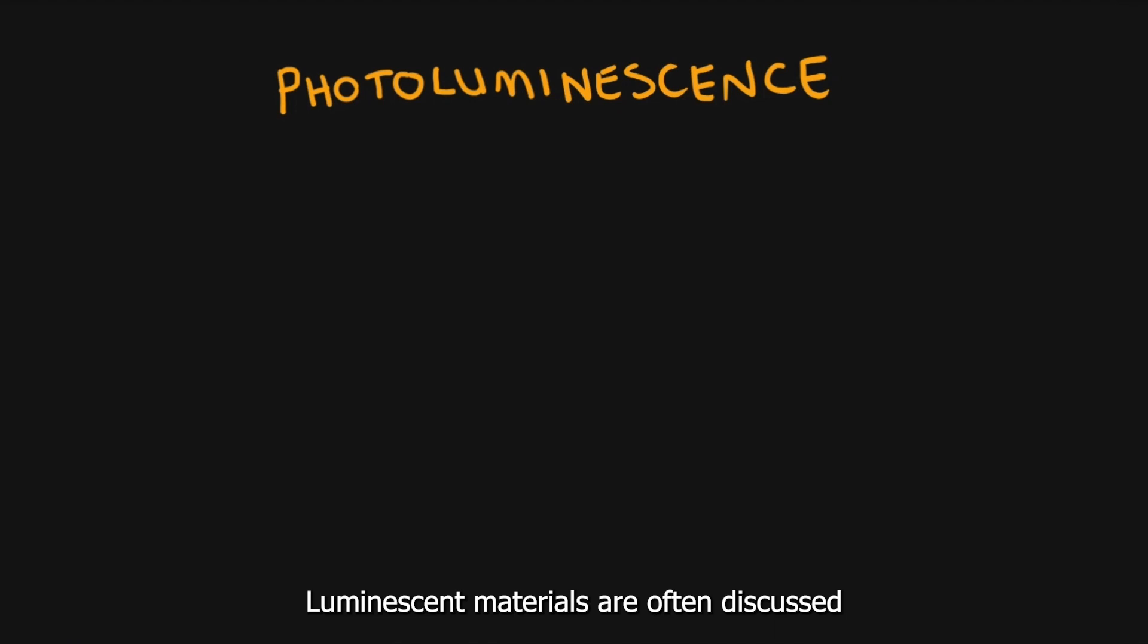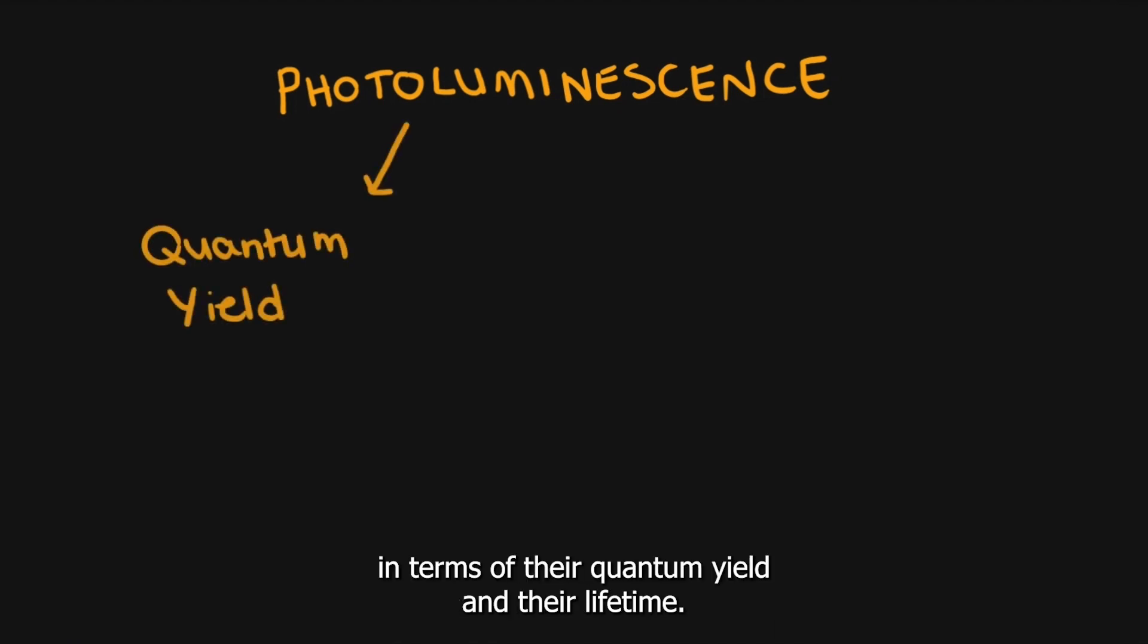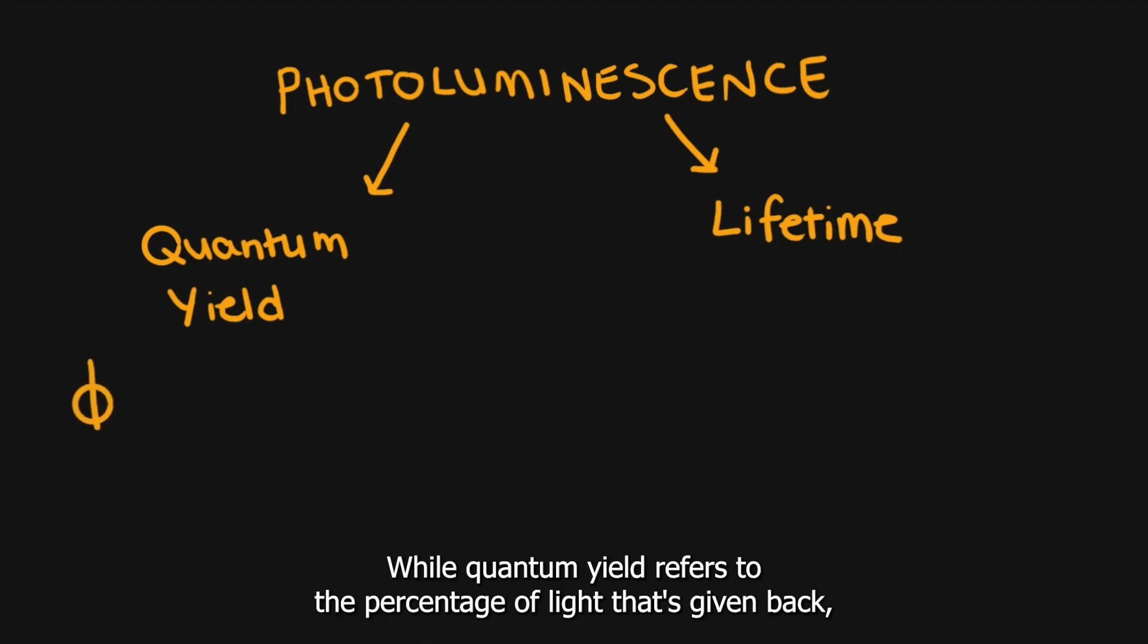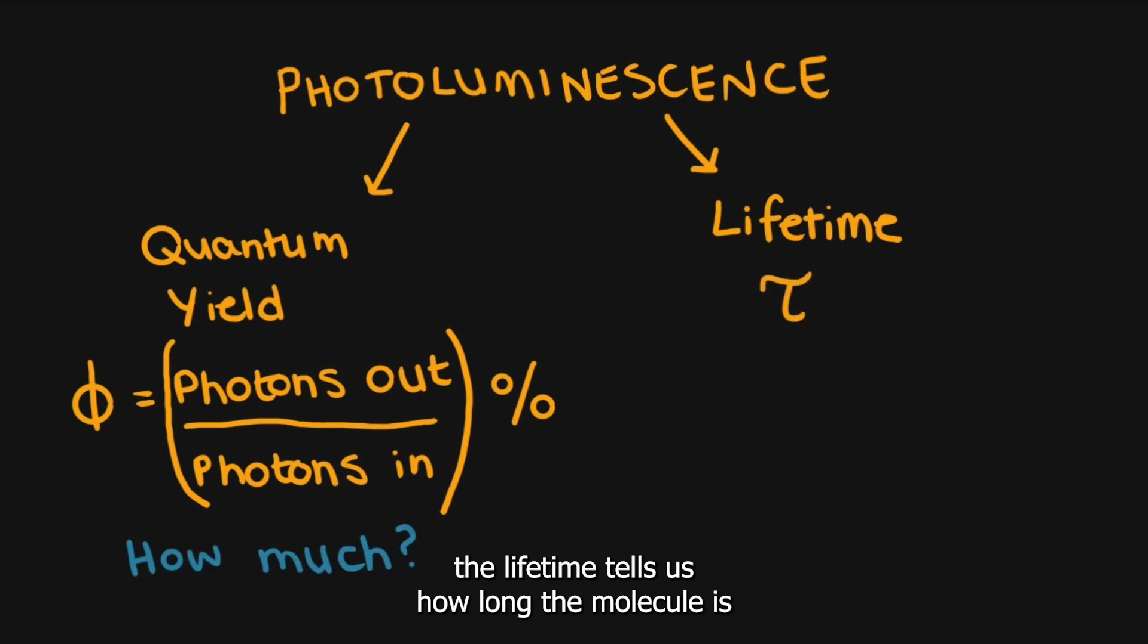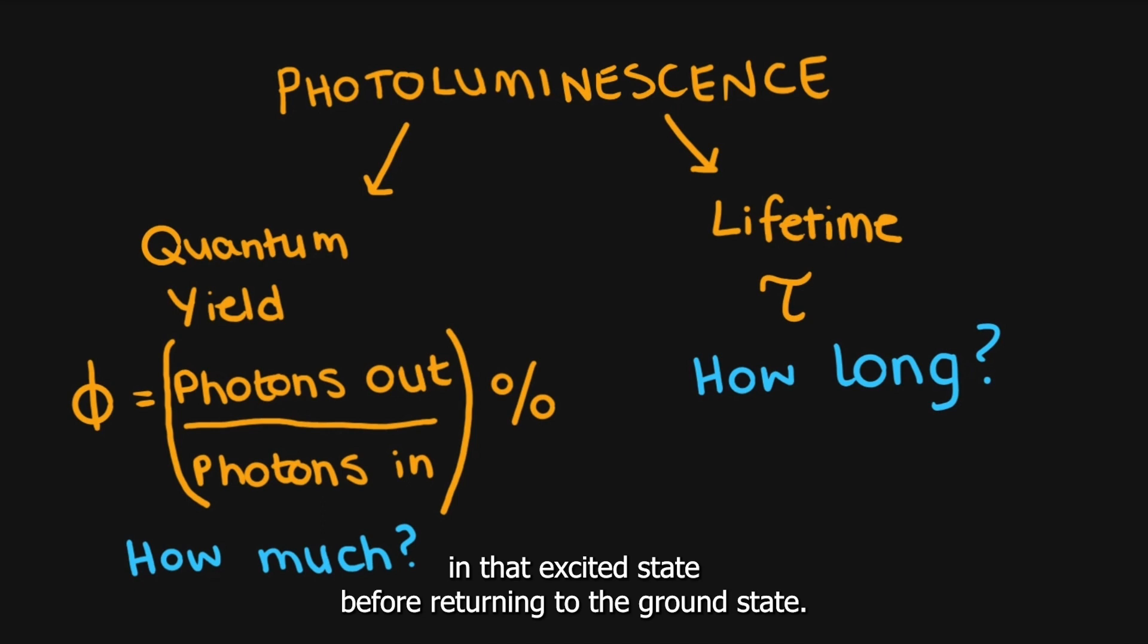Luminescent materials are often discussed in terms of their quantum yield and their lifetime. While quantum yield refers to the percentage of light that's given back, the lifetime tells us how long the molecule is in that excited state before returning to the ground state.